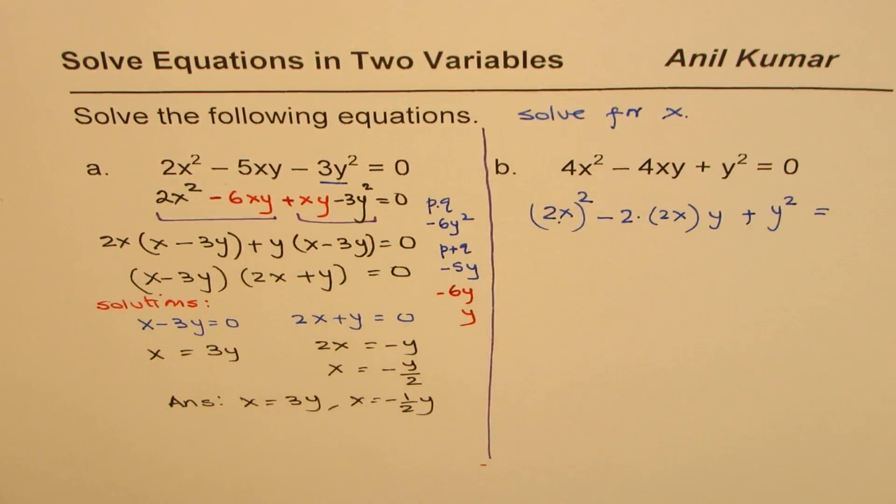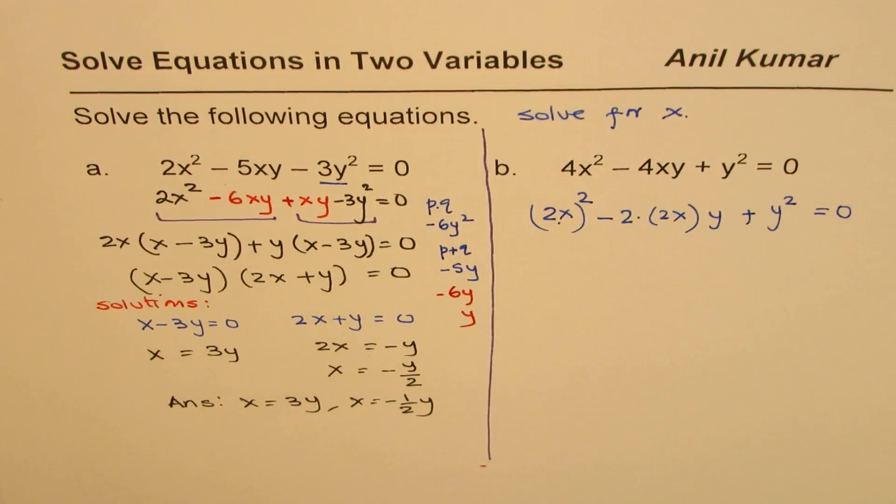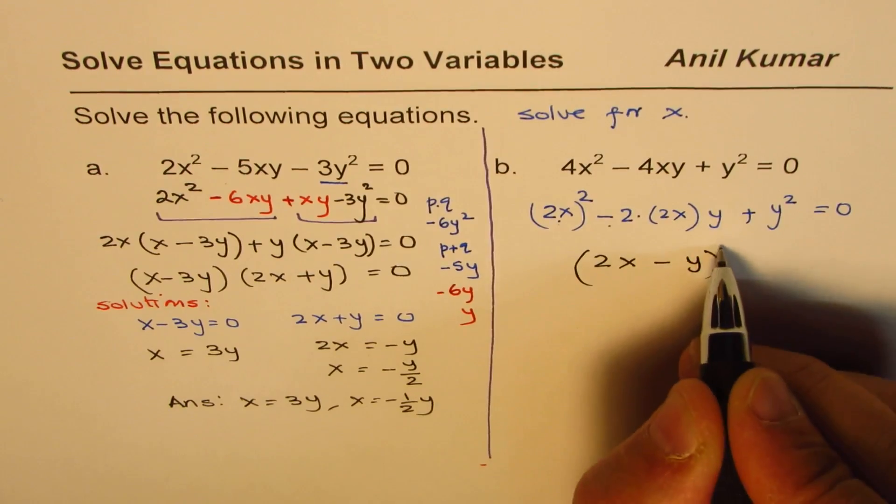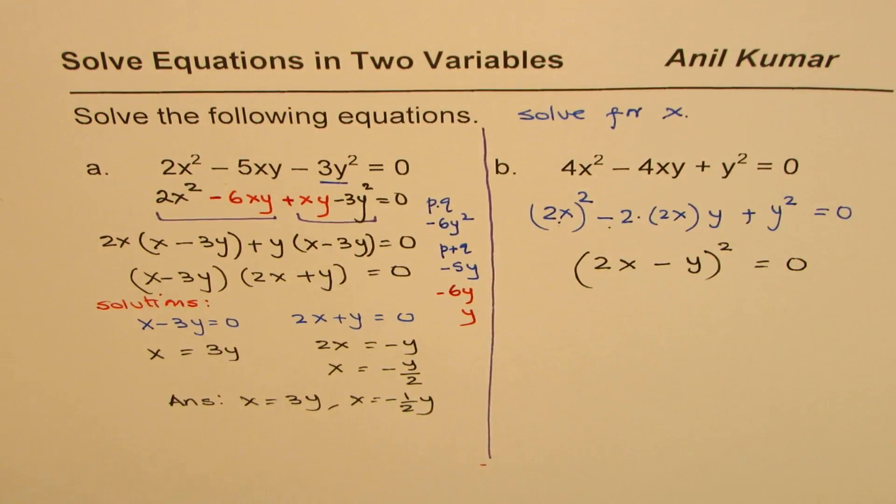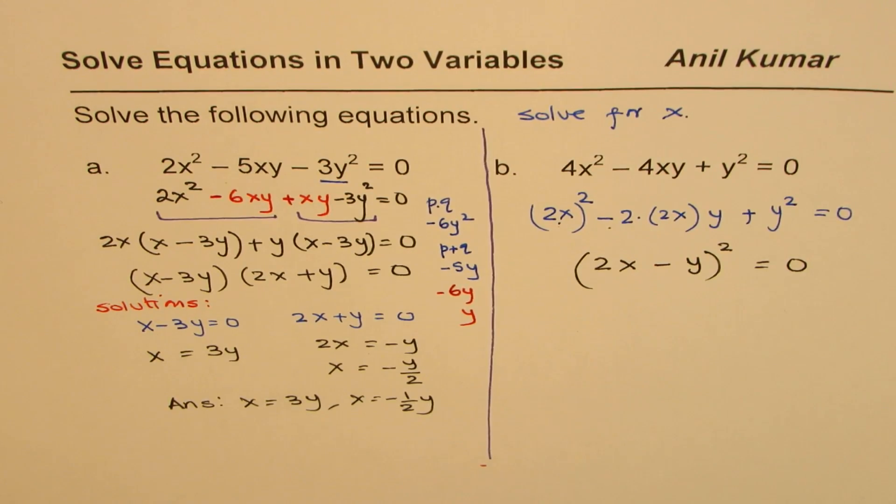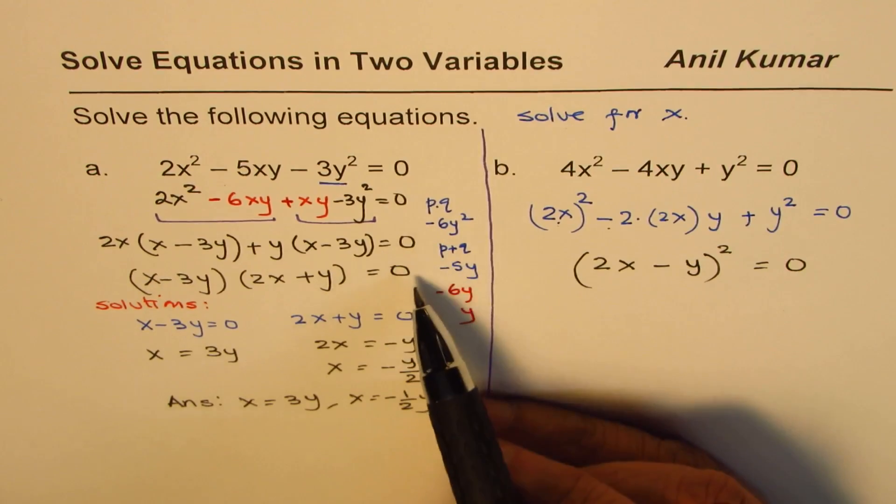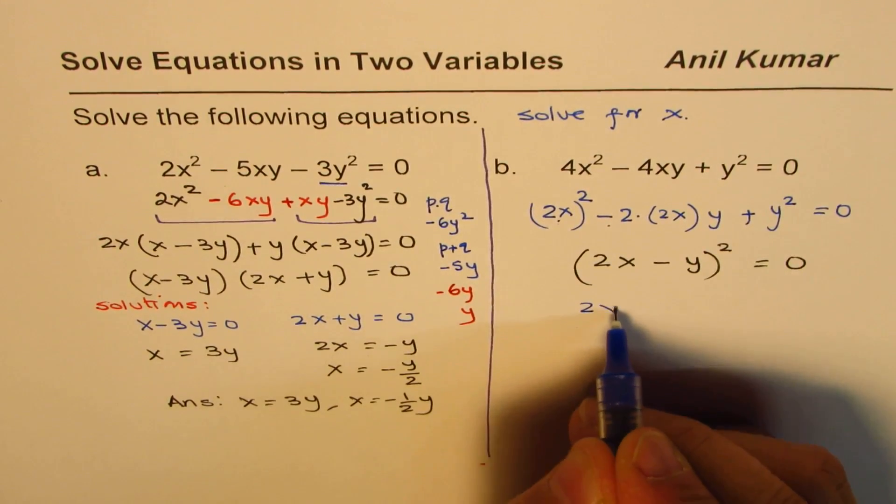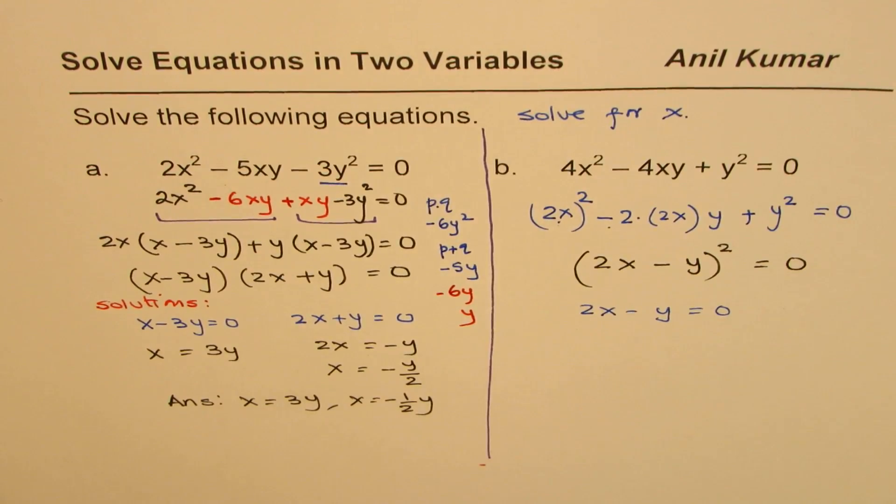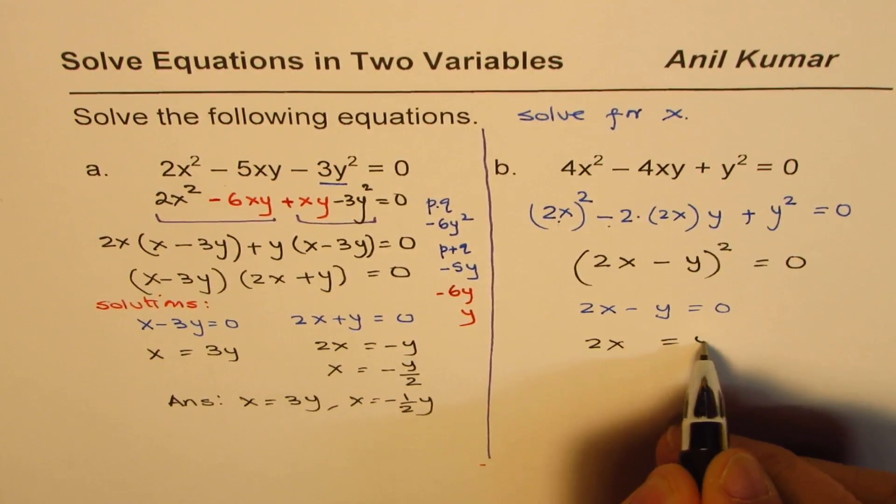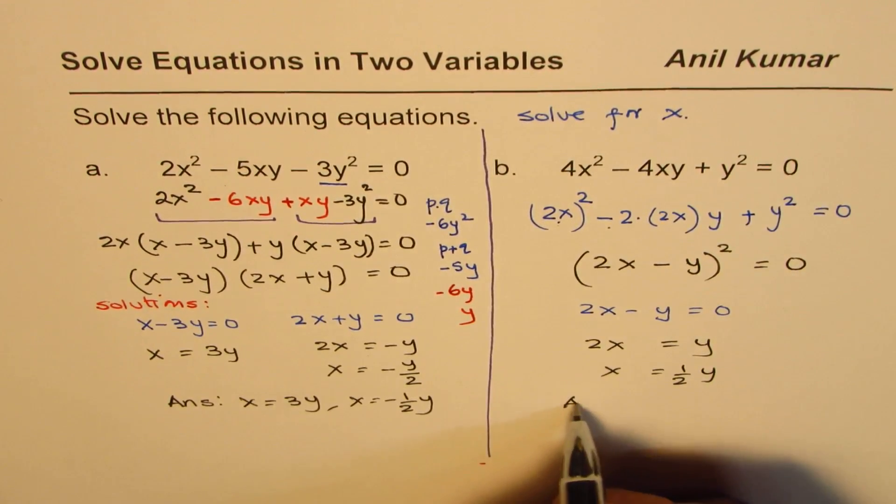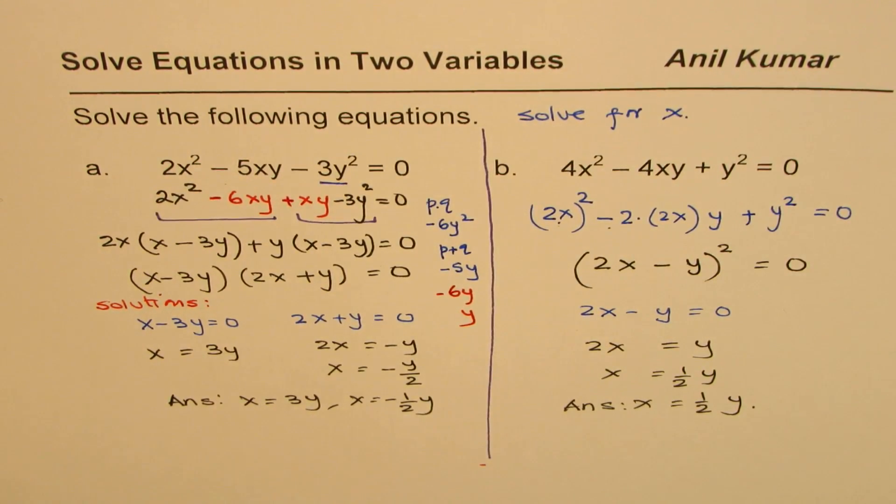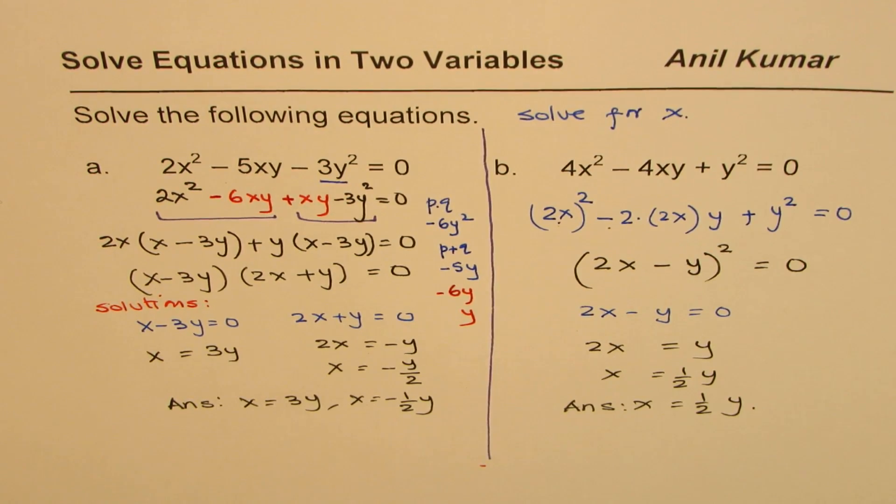And therefore, we could actually write that equation as 2x minus y whole square equals to 0. So since we recognize this equation as a perfect square, it was simple. You would always adopt this method of product and sum to factor. Well, here we have only one factor. So we'll equate this to 0. Equate 2x minus y to 0 and then solve for x. So we have 2x equals to y, x equals to half y. So we have our answer that x is equal to half y. So I hope with this you understand how to solve equations where we seemingly have two variables.